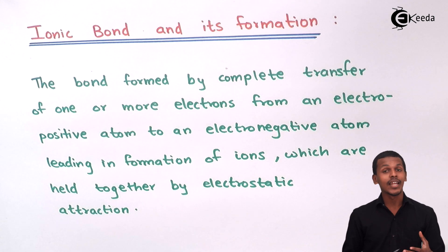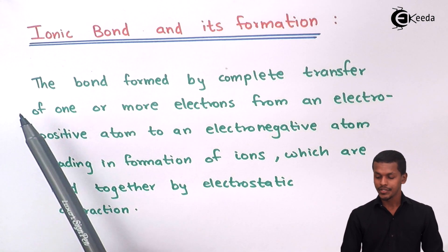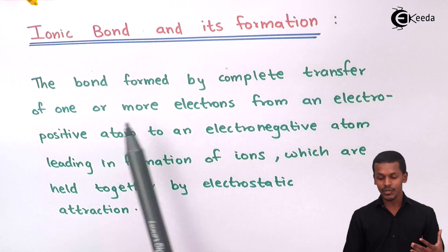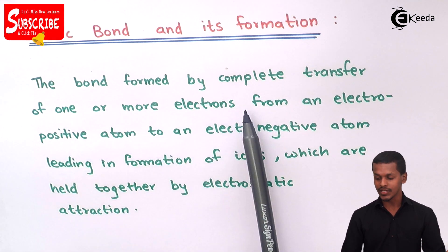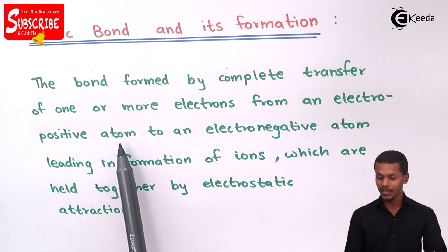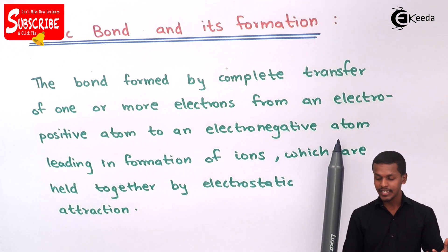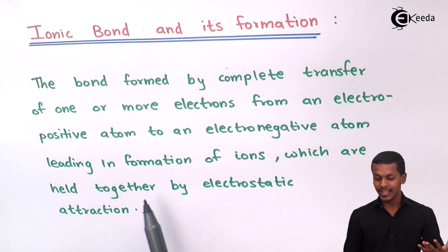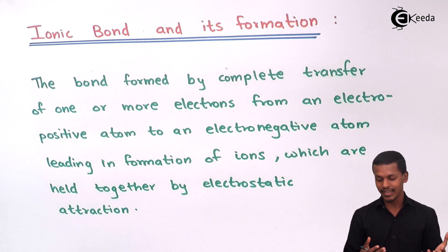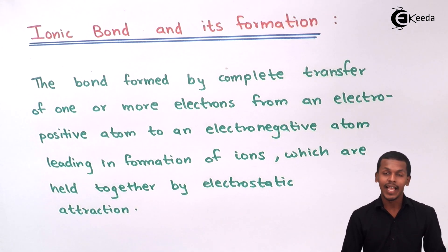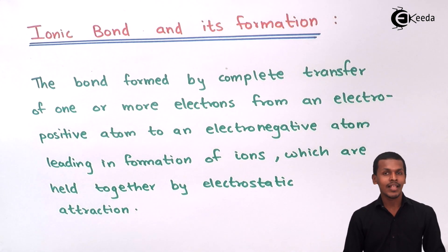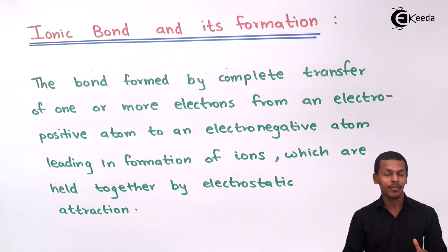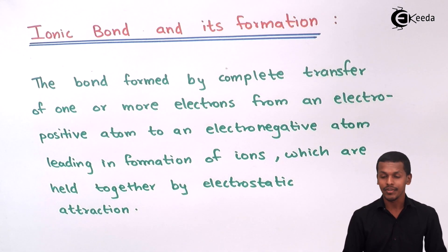So now let us understand what an ionic bond actually is. The bond formed by the complete transfer of one or more electrons from an electropositive atom to an electronegative atom, leading to the formation of ions which are held together by electrostatic force of attraction — that is what the ionic bond is, or we could call it the electrovalent bond.